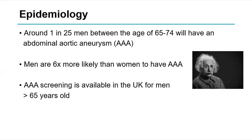In terms of epidemiology, around 1 in 25 men between the ages of 65 and 74 will have an abdominal aortic aneurysm — up to six times more likely than women. The picture here shows Albert Einstein in the 1950s; he had an aneurysm repair performed by Nissen. Aneurysm screening is currently available for men above the age of 65 years.